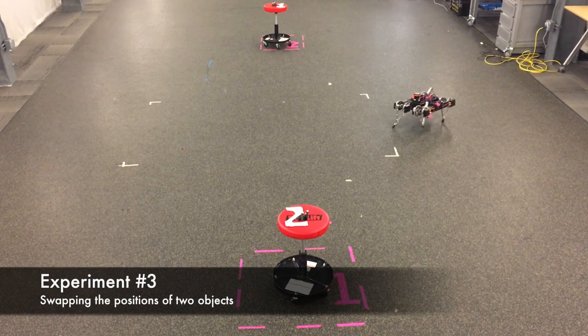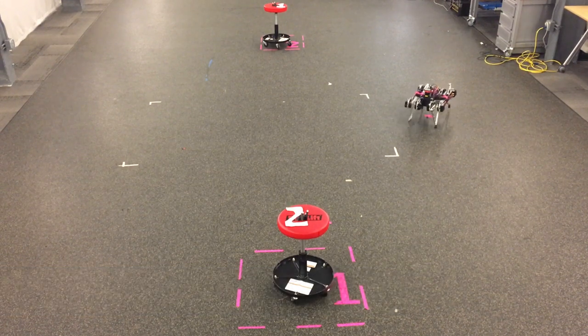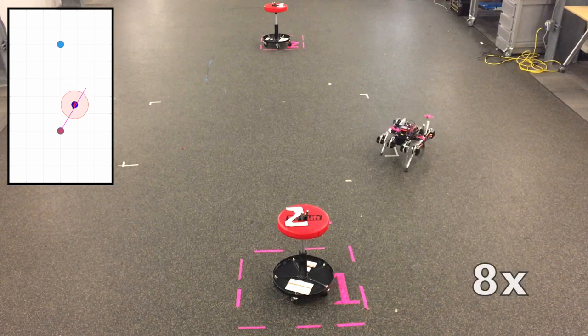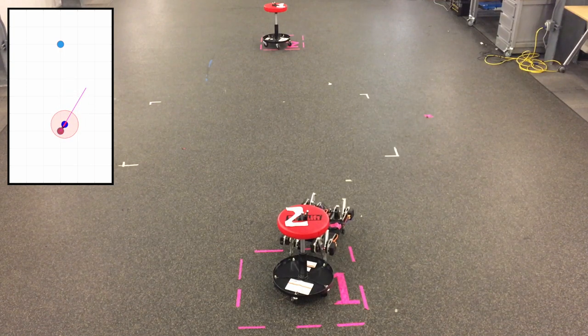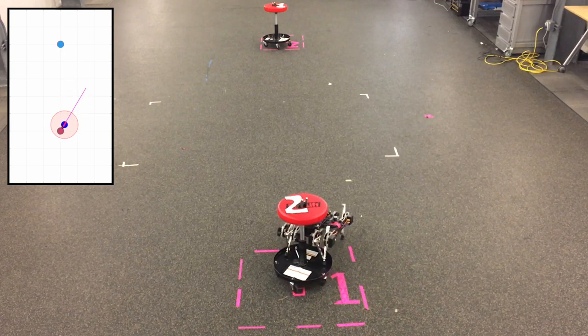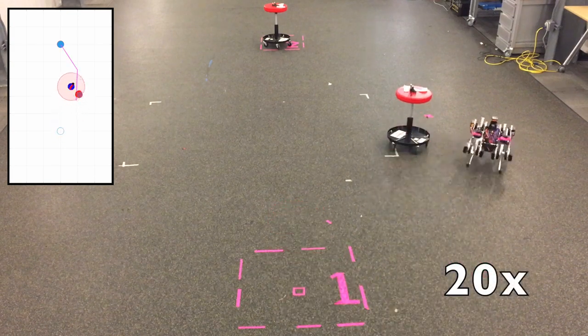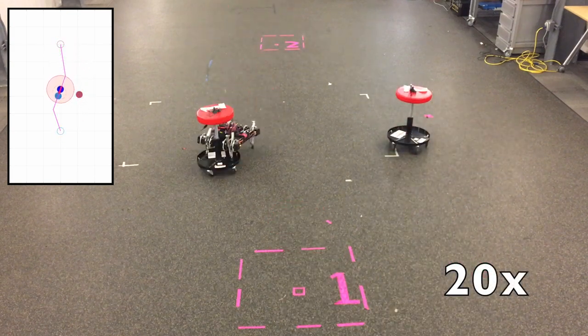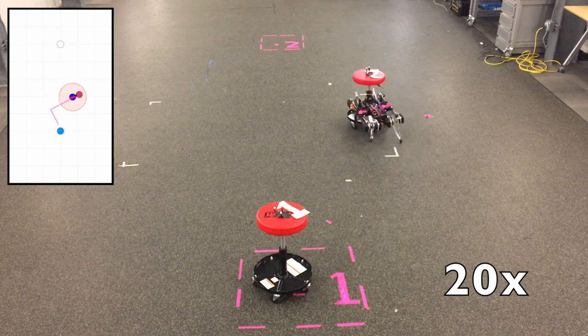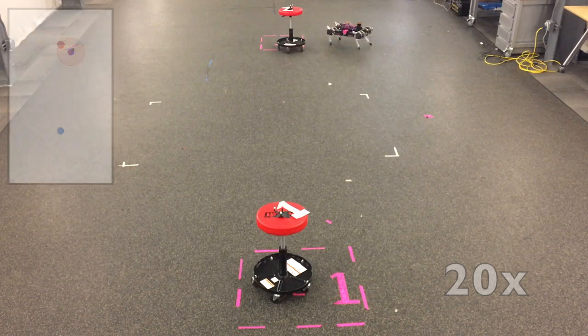In this swapping task, each stool is initially placed in each other's goal region, demanding that the deliberative layer move one stool out of the way before placing the other. A MATLAB simulation of the task shows reference paths provided by the deliberative layer. Though the trajectories may vary from those planned, the reactive planner allows the robot to successfully recover and complete the plan.